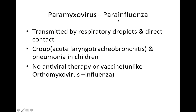Moving on: paramyxovirus is transmitted by respiratory droplets and direct contact. Croup, which is sometimes called acute laryngotracheobronchitis, and pneumonia in children are associated features. A question might ask which virus causes acute laryngotracheobronchitis, and you'd have to know that's parainfluenza. There is no antiviral therapy or vaccine for parainfluenza, unlike orthomyxovirus influenza, which had amantadine.